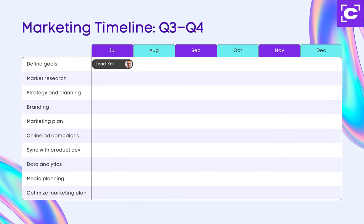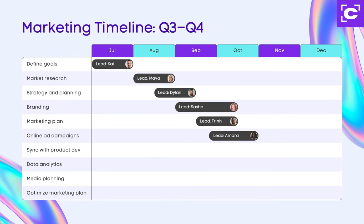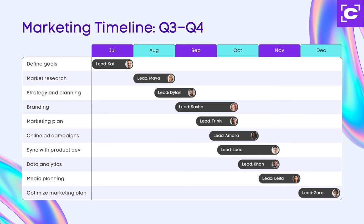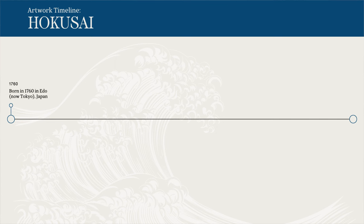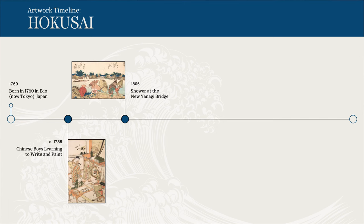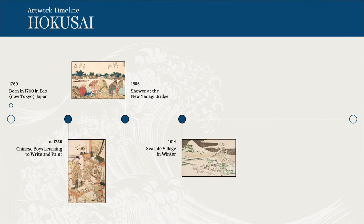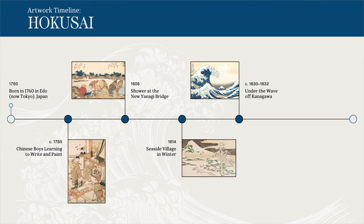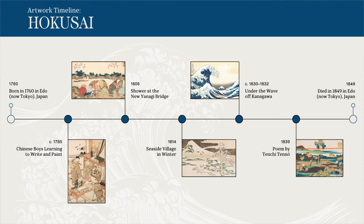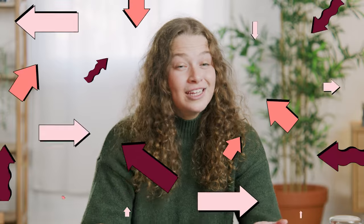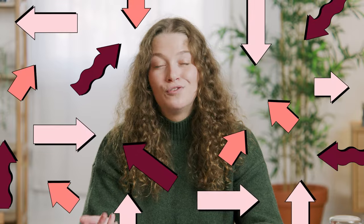In project management, timelines are used to outline milestones, deadlines, and dependencies, ensuring team members have a clear understanding of their tasks and timeframes. In storytelling or historical writing, timelines help convey the narrative's progression, making it easier for the audience to follow the plot and understand relationships between events. They're really an effective tool for enhancing communication, simplifying complexity, and keeping everyone on the same page.